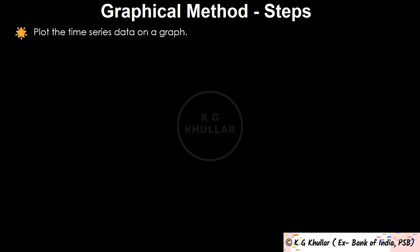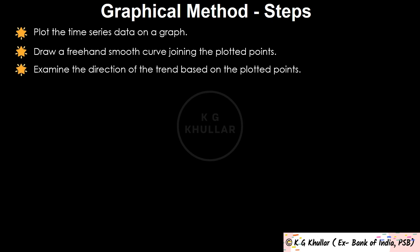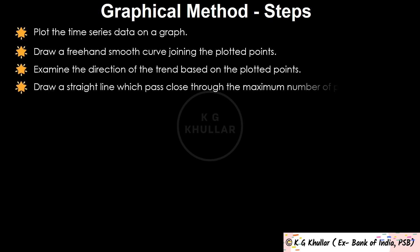In the first step, plot the time series data on a graph. In the second step, draw a freehand smooth curve joining the plotted points. Then examine the direction of the trend based on the plotted points. Finally, draw a straight line which will pass close through the maximum number of points plotted.